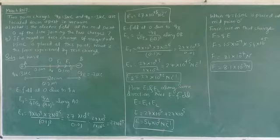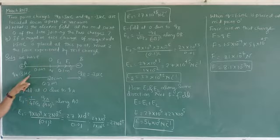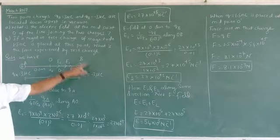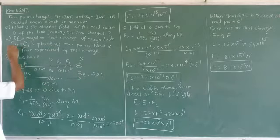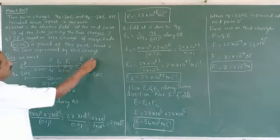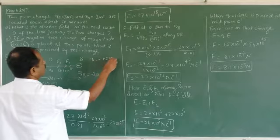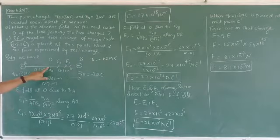Now, what is the problem? This is one charge at point A, another charge is at point B. At point A: +3 microcoulombs. At point B: minus 3 microcoulombs. The test charge Q is minus 1.5 nanocoulombs, placed at the midpoint O. First, we will find out the electric field at this point.